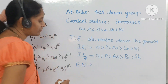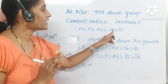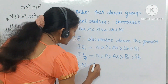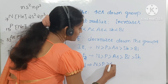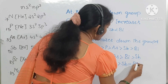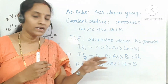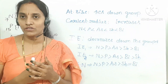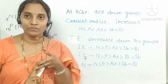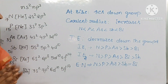Electronegativity also decreases down the group. However, antimony and bismuth have very similar electronegativity values. The order is: N > P > As > Sb ≈ Bi. This is because down the group, atomic size increases and shielding effect also increases, leading to similar electronegativity values for antimony and bismuth.